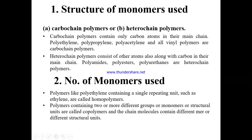I shall now discuss each class briefly. Carbocyclic polymers contain only carbon atoms in their main chain — polyethylene, polypropylene, polyacetylene, and all vinyl polymers are carbocyclic. Heterocyclic polymers consist of carbon and other atoms in their main chain — polyamides (carbon and nitrogen), polyesters (carbon and oxygen), and polyethers are all heterocyclic polymers.